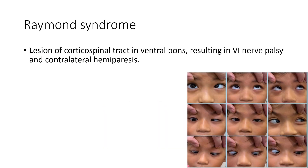Next is Raymond syndrome. In this case there is a lesion of the corticospinal tract in the ventral pons resulting in sixth nerve palsy and contralateral hemiparesis. This picture shows a child with Raymond syndrome — note the right-sided sixth nerve palsy.